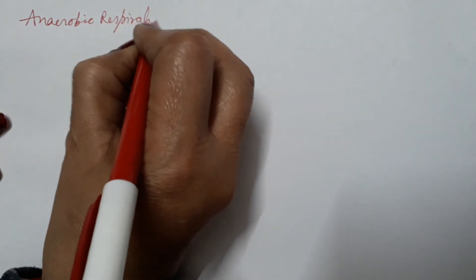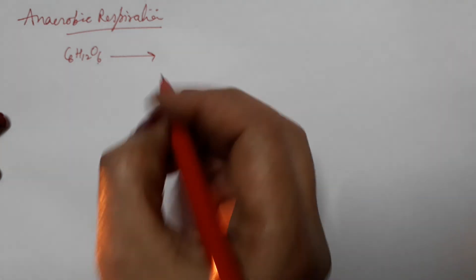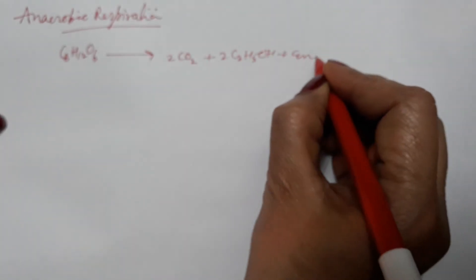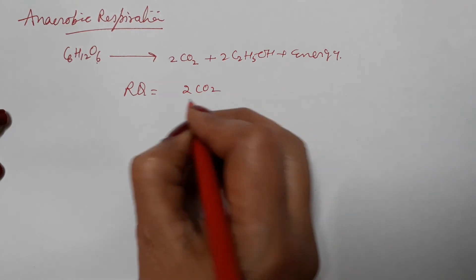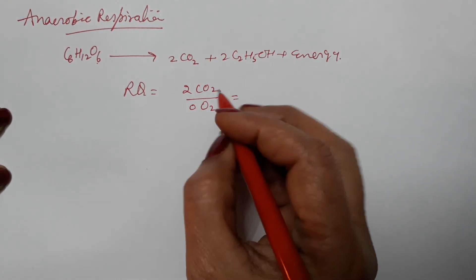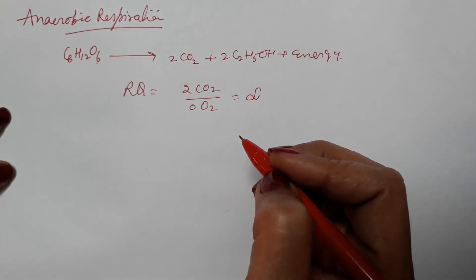In case of anaerobic respiration, glucose is the respiratory substrate and no oxygen is utilized. In case of alcoholic fermentation, two molecules of CO2 are released and two molecules of ethanol are produced, along with energy. So, the RQ value is 2 CO2 released divided by zero molecules of oxygen used. Since a number is divided by zero, it comes equal to infinity. RQ in case of anaerobic respiration is infinity.